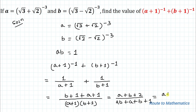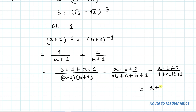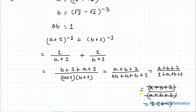Expanding the denominator: (a+1)(b+1) = ab + a + b + 1. Since ab = 1, this becomes 1 + a + b + 1 = a + b + 2. So we have (a + b + 2) / (a + b + 2). Both numerator and denominator are the same, so they cancel, giving us 1. Thus our answer is 1. I hope you've understood the solution. Thanks for watching — please subscribe to my channel and hit the like button for more such interesting videos!